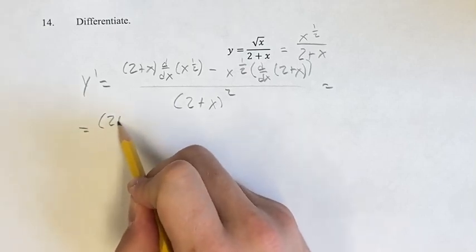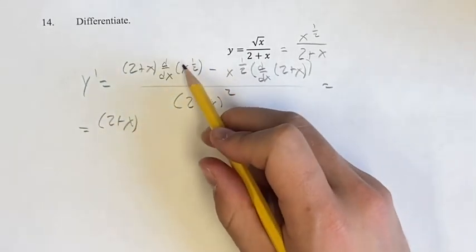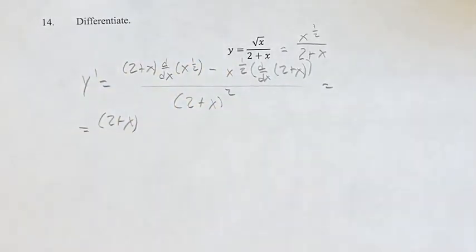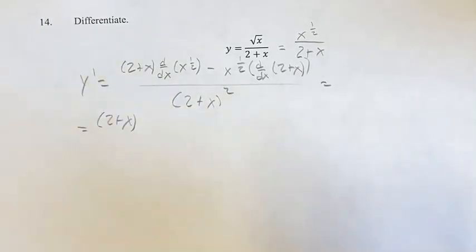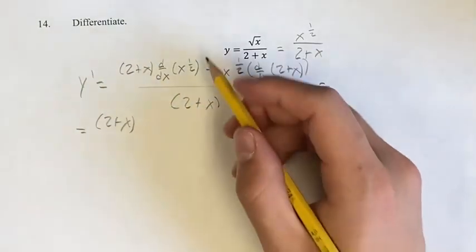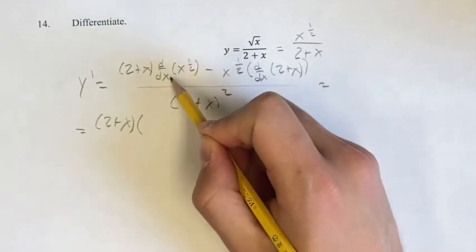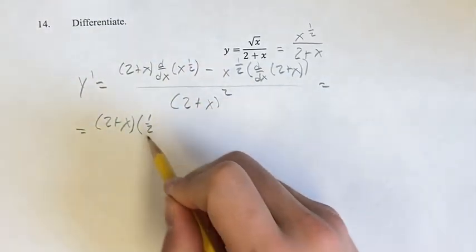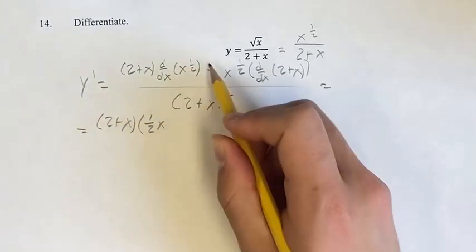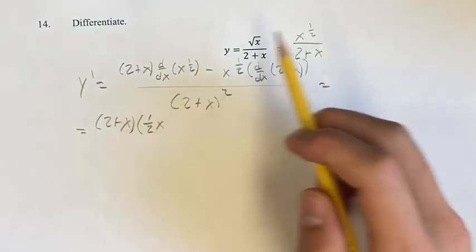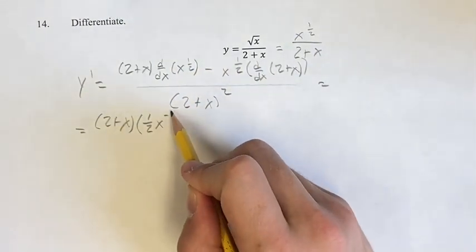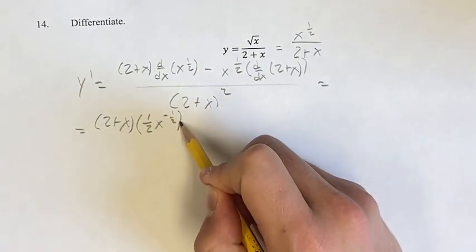First thing we do is calculate those derivatives. You can see why we changed this into x to the 1 half because we now have a power function, and finding the derivative of that is bringing down the exponent as your coefficient. Then your new exponent is the old one minus 1. So 1 half minus 1 is negative 1 half.